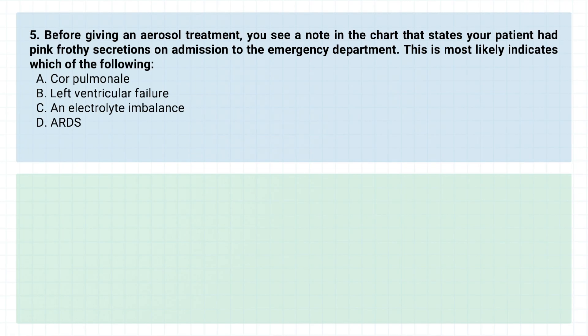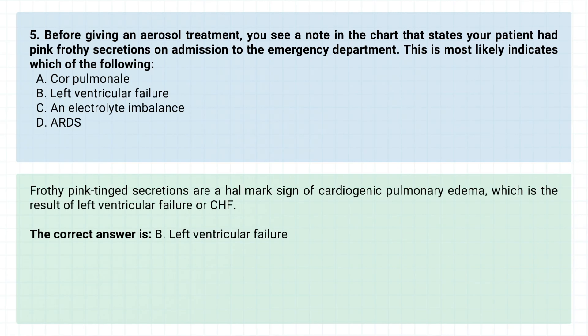Question number five. Before giving an aerosol treatment, you see a note in the chart that states your patient had pink, frothy secretions on admission to the emergency department. This most likely indicates which of the following? A. Cor pulmonale. B. Left ventricular failure. C. An electrolyte imbalance. D. ARDS. The correct answer is B. Left ventricular failure. Frothy pink-tinged secretions are a hallmark sign of cardiogenic pulmonary edema, which is the result of left ventricular failure or CHF.